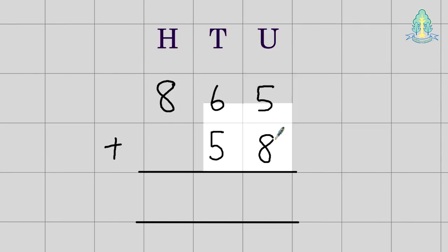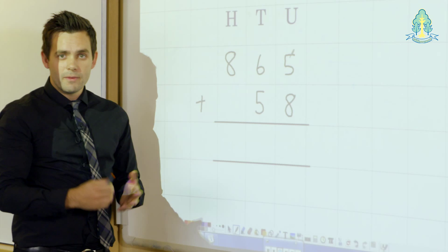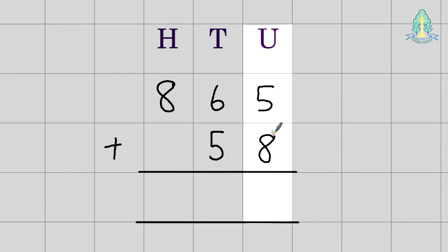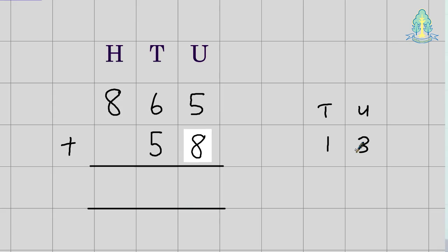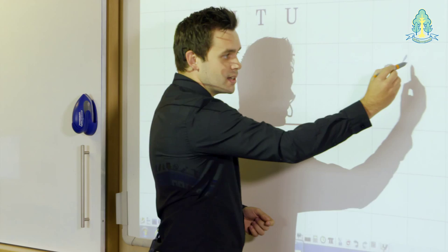Properly aligned, operation symbol is outside, now we can start at the right hand side with the units. Now, when we do our units this time, five plus eight is thirteen, we have a two-digit number. Now, thirteen itself can be considered as one ten, three units.